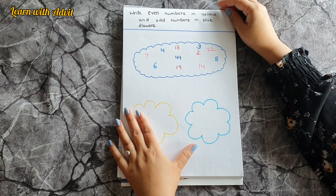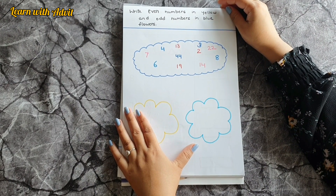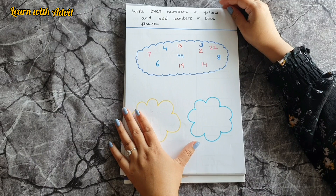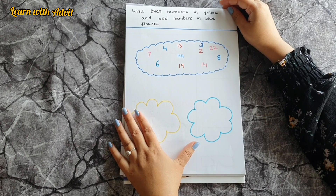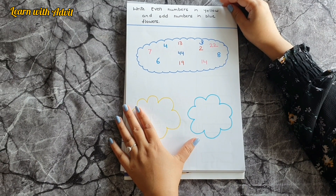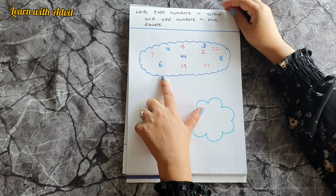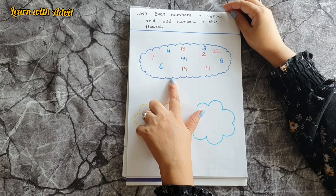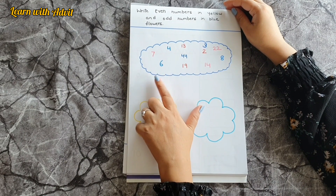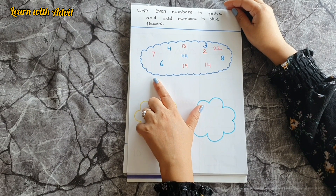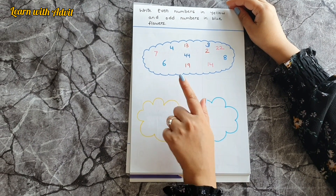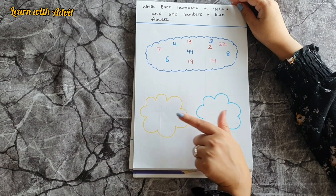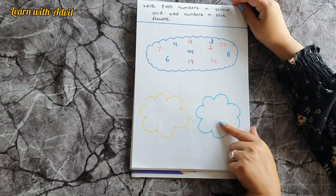This sheet is about even numbers and odd numbers. What are even numbers? We can divide the numbers into two equal parts, like 6 — we can divide it as 3 plus 3. And odd numbers we cannot divide equally. So you have to write all even numbers in yellow flowers and odd numbers in blue flowers.